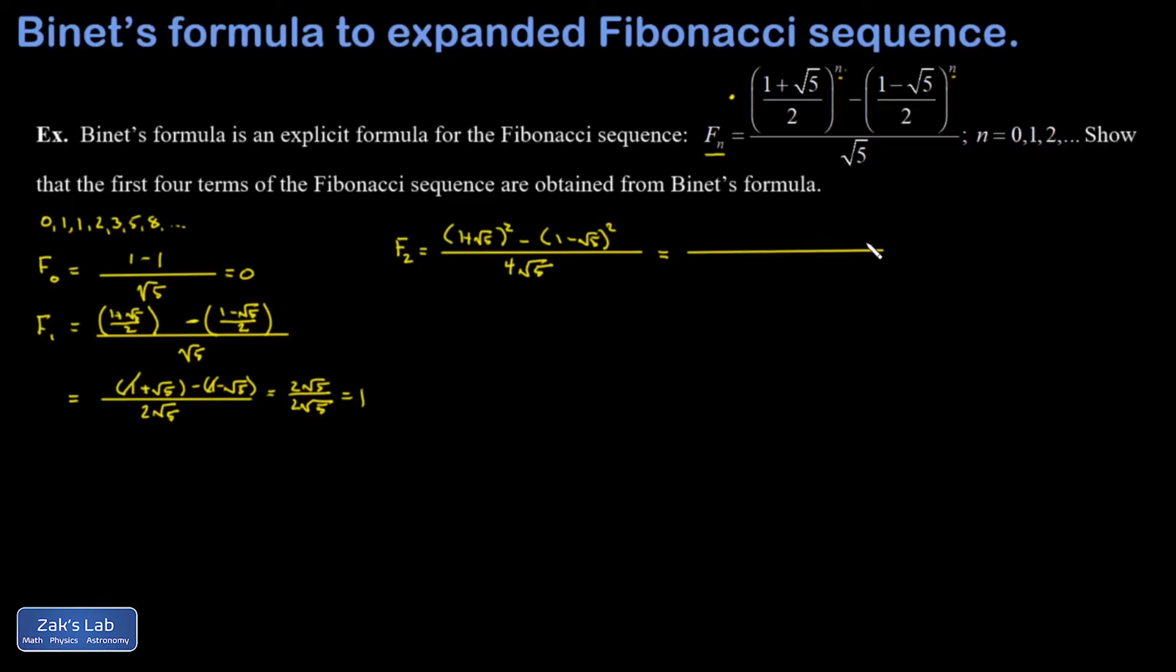Squaring a binomial means that you multiply it by itself, and then I use FOIL on that. So out of the first one, I get a 1. My cross terms are both root 5, so I have 2 root 5. And then root 5 times itself is the L in FOIL, and that's 5.